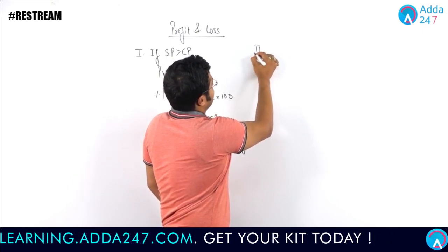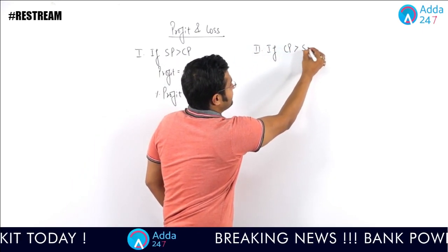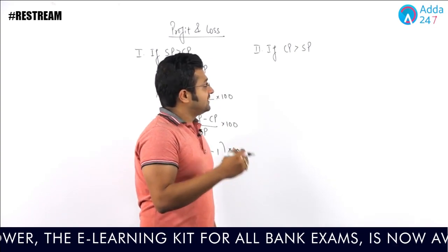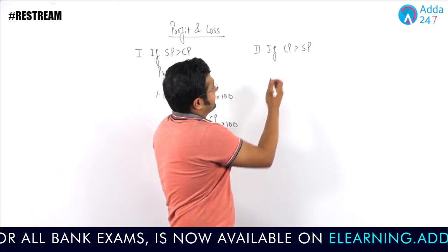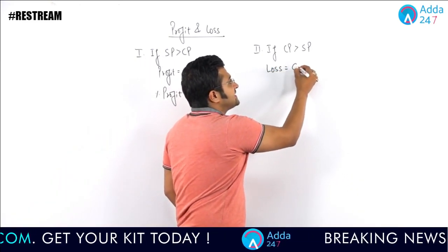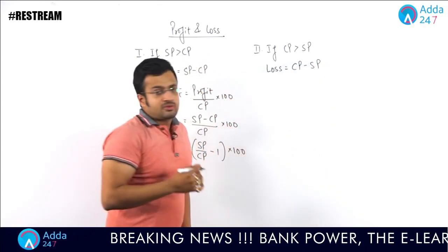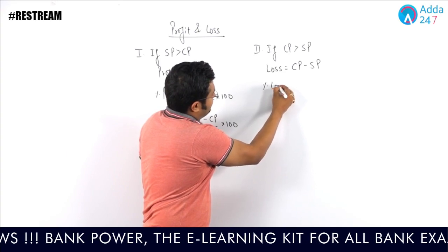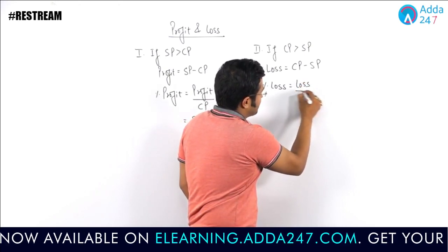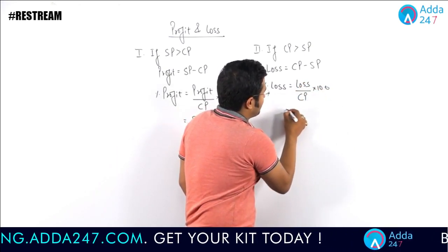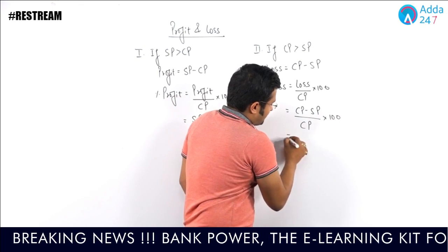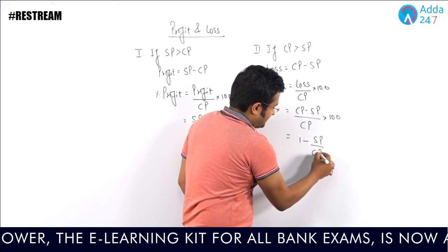In the second case, if cost price is greater than selling price, the person purchased the article at a higher price and sold it at a lesser price — in that case there will definitely be a loss. The value of that loss will be equal to CP minus SP. Percentage loss is nothing but loss as a percentage of cost price: loss upon CP into 100, or (CP minus SP) upon CP into 100, which equals (1 minus SP upon CP) into 100.